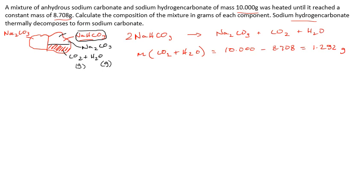To get to the final answer, we need to work out the moles of carbon dioxide and water, then use the balanced equation to find the moles of sodium hydrogen carbonate they came from. Once we have the moles of sodium hydrogen carbonate, we convert to mass and that's part of our answer. Moles equals mass over Mr, and from the balanced equation we know that CO₂ and H₂O are equimolar.